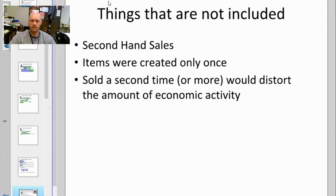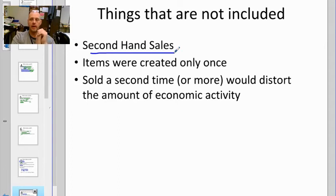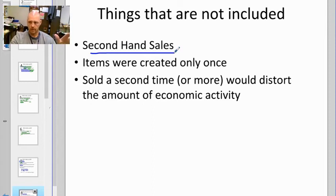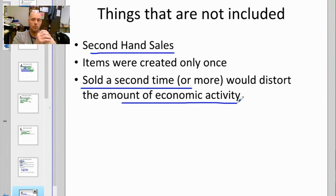GDP does not count secondhand sales or used stuff. If I go out and buy a brand new 2020 pickup truck, that counts toward 2020 GDP. But if I go to a dealer and buy a 2017 used vehicle, that truck was already counted once — it was made, someone bought it, drove it, traded it in, and now I'm buying it used. Counting it a second time would distort economic data and make our GDP look massively large when we didn't produce anything new.